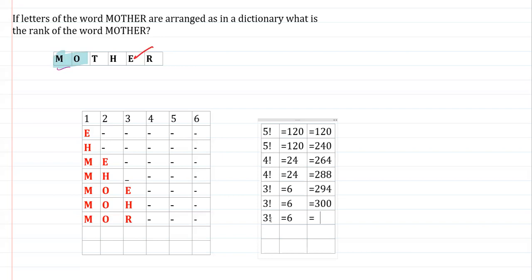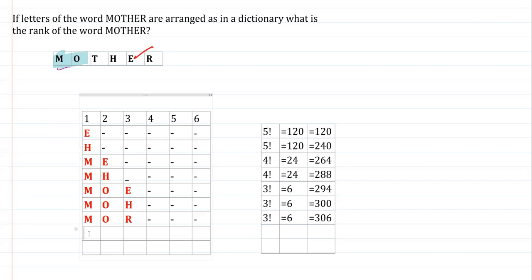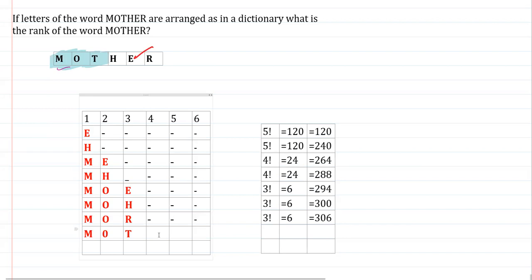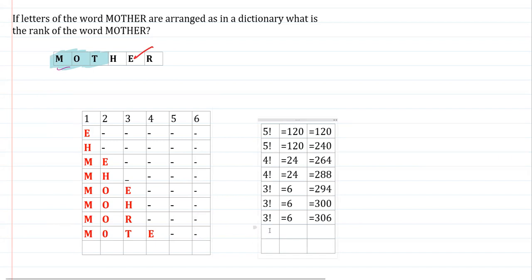After MOR words are exhausted, the next combination is MOT. Now we fix T in the third place and decide the fourth letter. Alphabetically, E comes first — fixing E in the fourth place leaves two slots arranged in 2! = 2 ways. Adding 2 to 306 gives 308.